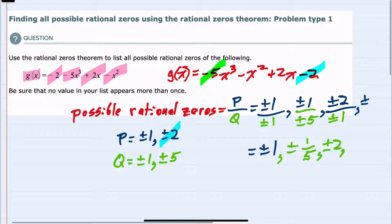And then one last combination would be to have the ±2 again in the numerator, but this time the ±5 in the denominator, which simplifies to ±2/5.